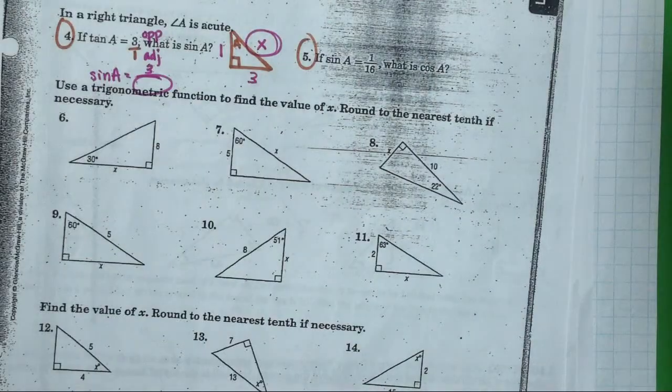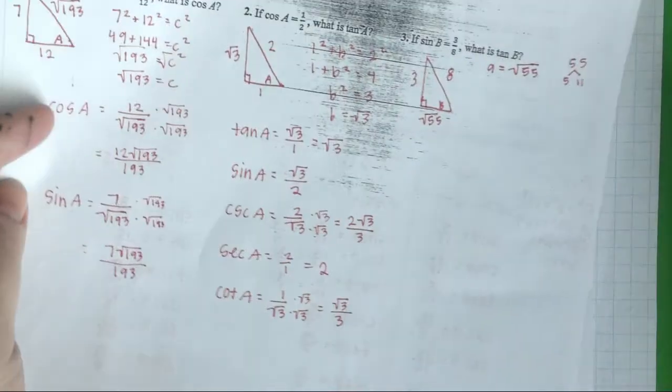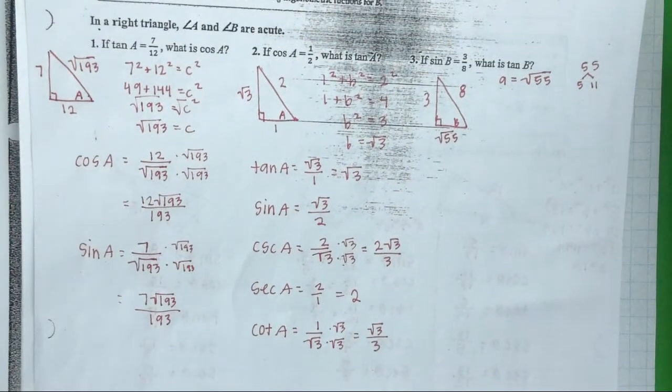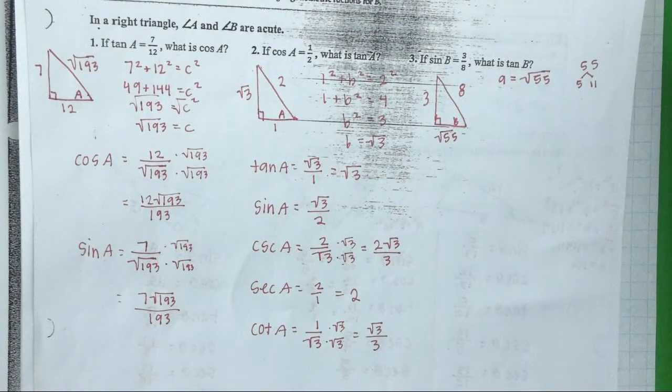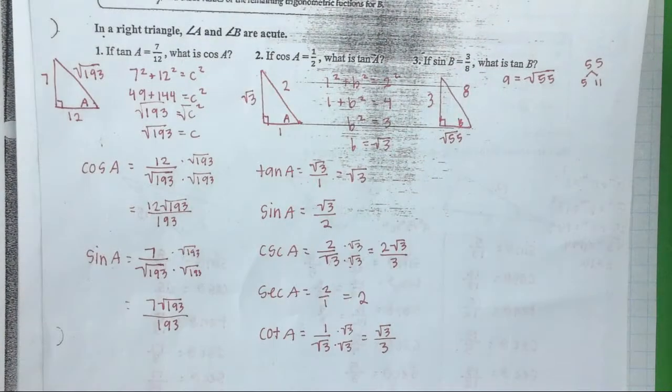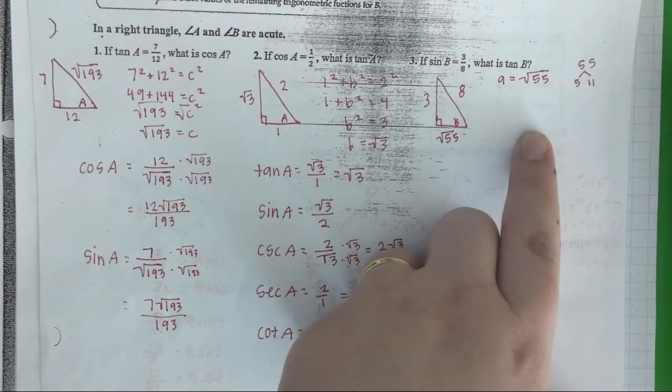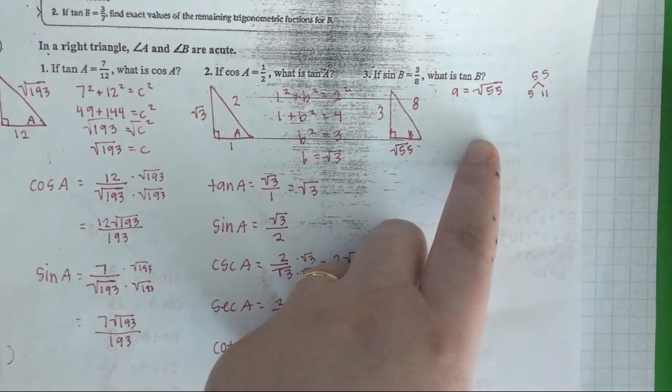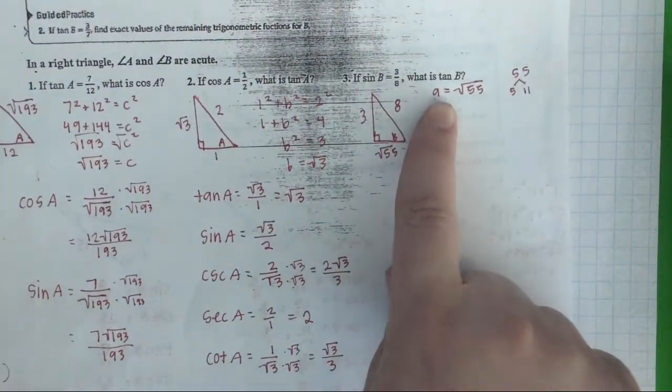Okay, if there are no questions about this, go on to the next side. So I see that there were some problems where you had to, like you were given tangent A as 7 over 12 and you had to find cosine A. Were there any problems with 1, 2, or 3 down here? I see y'all stopped on number 3. We could finish it. Make sure we're on the same page. In fact, let's do that. So number 3 down here.